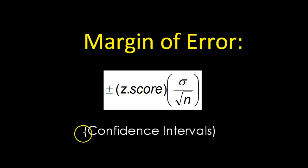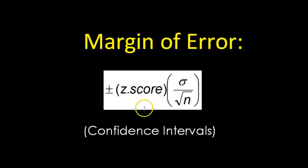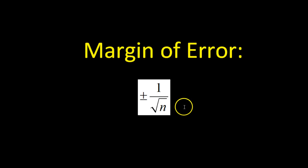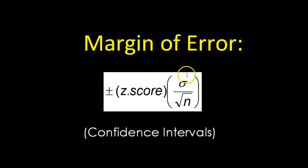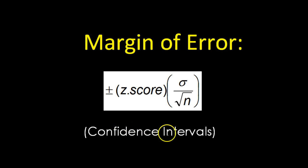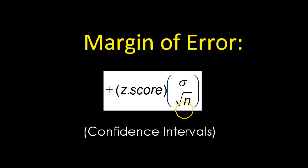If they are talking about confidence intervals — if you hear that phrase — then go ahead and use this formula instead of the old formula. Confidence intervals is like a code word to use z-scores and standard deviation.